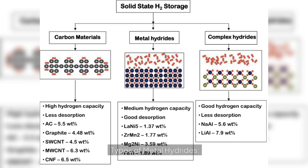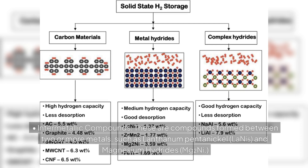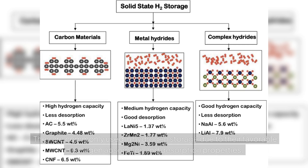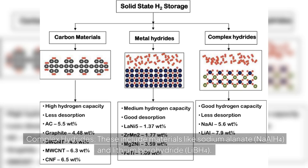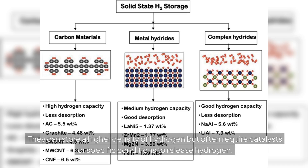Types of metal hydrides. Intermetallic compounds: these are compounds formed between two or more metals, such as lanthanum nickel alloy (LaNi5) and magnesium hydrides. They are commonly used in hydrogen storage due to their favorable hydrogen absorption and desorption properties. Complex hydrides: these include materials like sodium alanate and lithium borohydride. They can store a higher density of hydrogen but often require catalysts or specific conditions to release hydrogen.